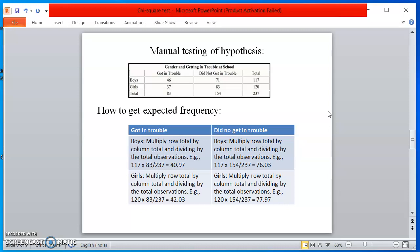For boys, multiply row total by column total and divide by the total observation. That is, multiply total row, that is 117 for boys, by the total column, 83. For first 46 boys, divided by total number 237, we get 40.97 for boys got in trouble. That is the expected frequency.